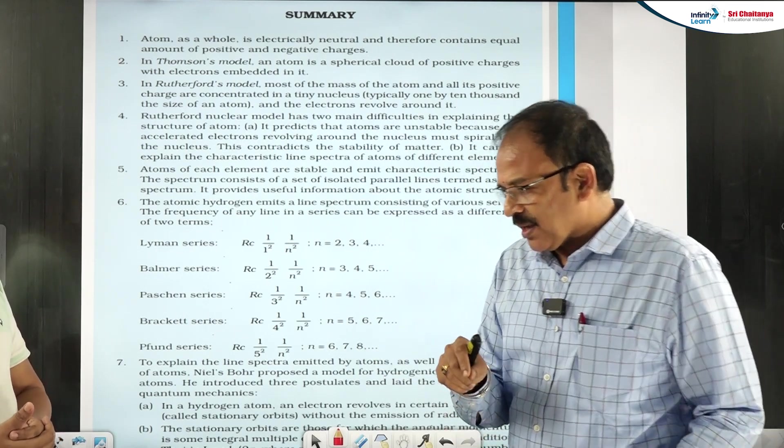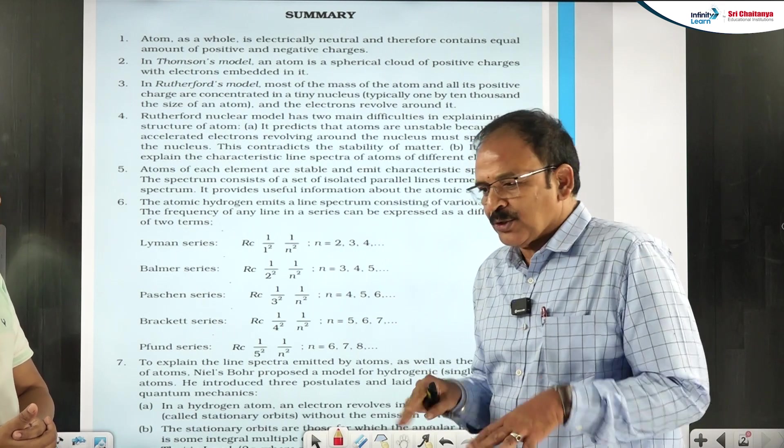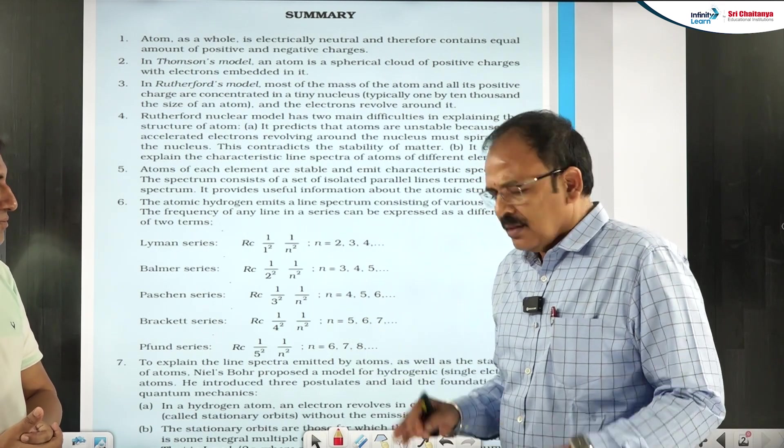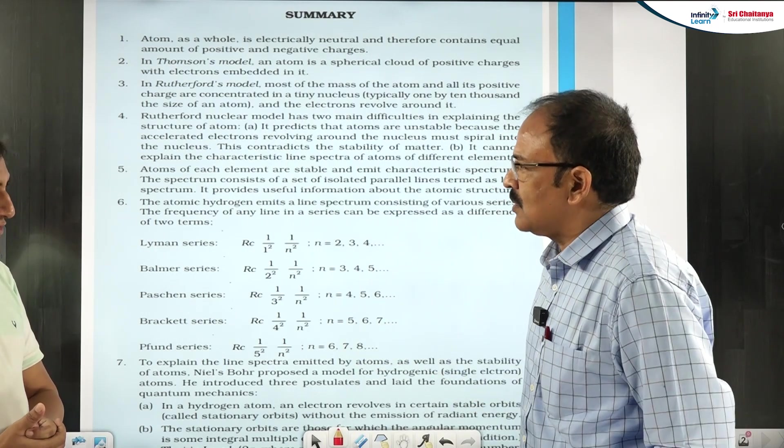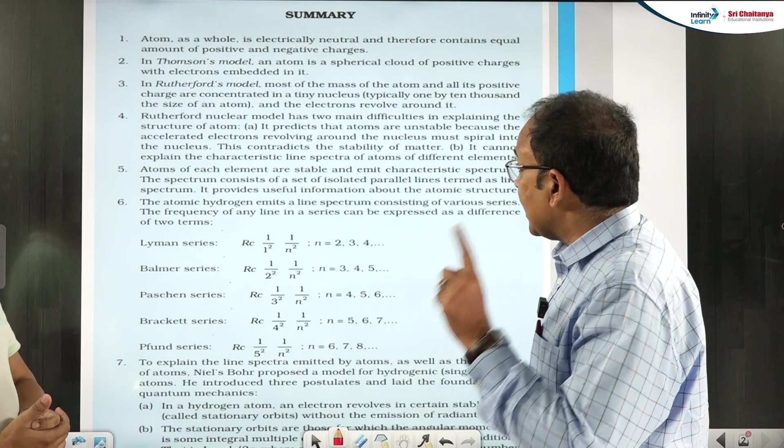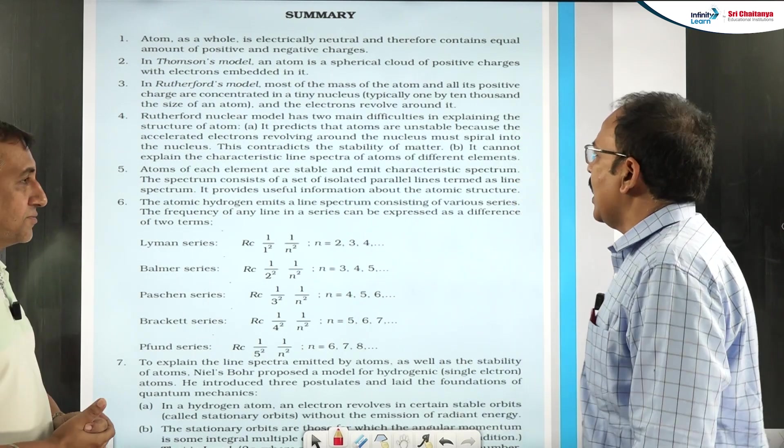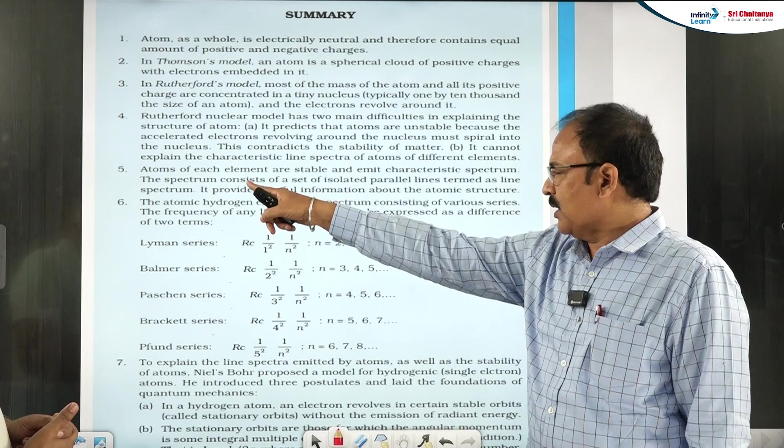And in that process, the electron because of its acceleration will lose energy and it will fall into the nucleus. If so is the case, atom will not exist at all. Even there is no atom, there is no matter at all. So there is nothing to discuss. But what we see is everything surrounding us is made up of molecules and atoms. So how to prove the existence of an atom? And that part is explained by Bohr. And that part is given in the fifth sentence sir.